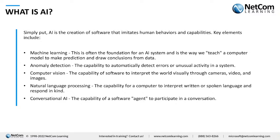Next is anomaly detection — the capability to detect errors. This can be used in the context of security, manufacturing, or quality control, and can be automated as part of AI. Computer vision refers to a system that visually interprets the world and the environment around it. You may have seen MATLAB models that draw conclusions about the road your car is on. Automated vehicles are big on computer vision, as are security systems and facial detection software.